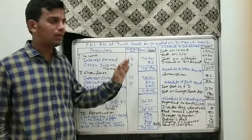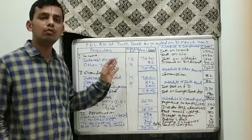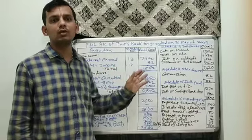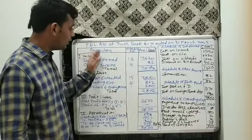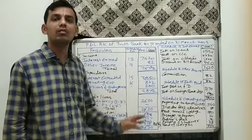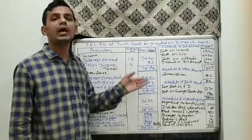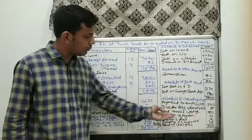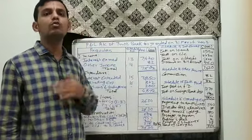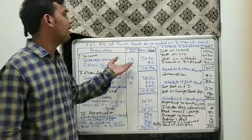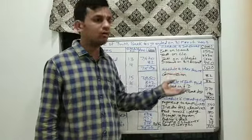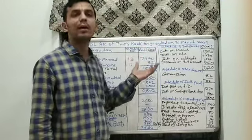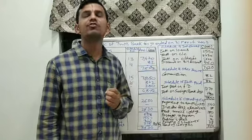This is it for this video. Try to solve the problem after watching this video again. Take a screenshot of the solution. If you have any difficulty, you can contact me. Go thoroughly through this solution — even for MCQ exams, you will need to know which schedule numbers items belong to. Understand how we prepared the profit and loss account for banking companies.